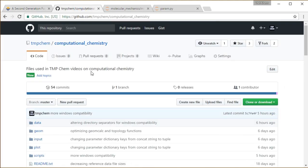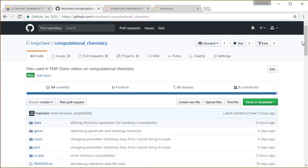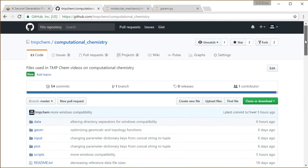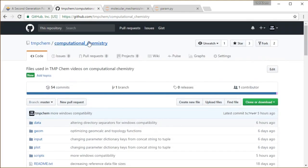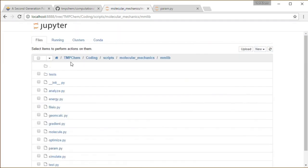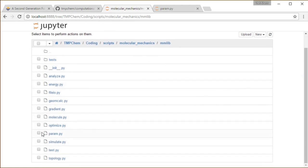In this chapter, I'm going to be going through a program that I've used to implement that energy function and some other stuff. From my GitHub account, you have the computational chemistry repository, as in the previous chapter. From the top level directory of that, we have the scripts, molecular mechanics, mmlib directory, and all the AMBER95 or 94 parameters are in this module param.py.